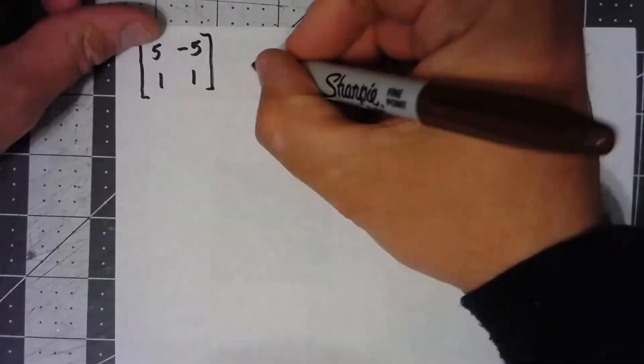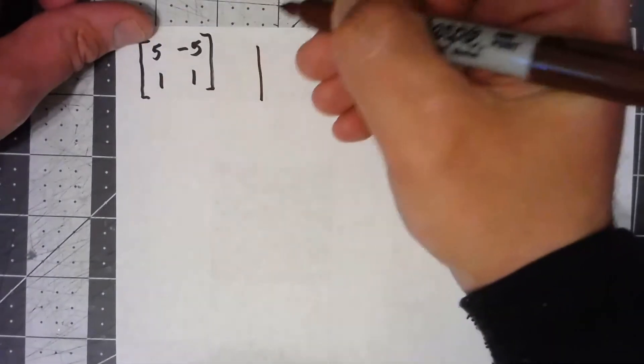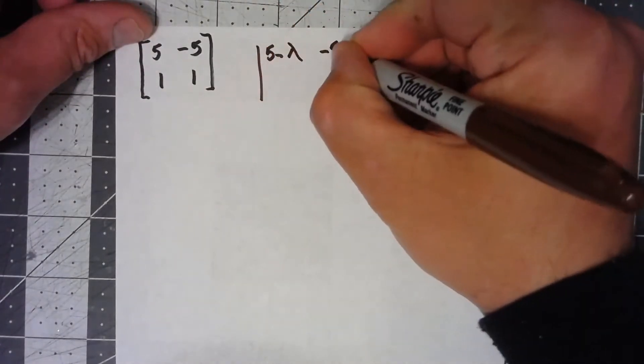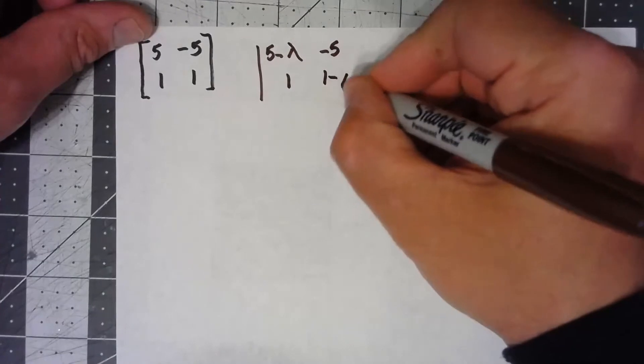Let's go ahead and try and find the eigenvalues and eigenvectors of this matrix here. So we're going to find the determinant of this minus lambda times I. So the determinant of 5 minus lambda, negative 5, 1, 1 minus lambda.